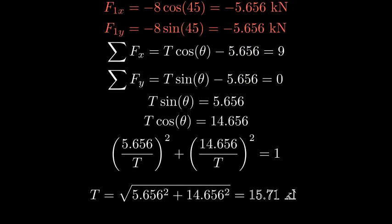Using the Pythagorean identity, sine squared plus cosine squared equals 1, we can solve for t.